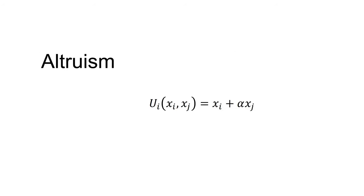Altruism is concern for the outcomes of others. To incorporate altruism, we simply need to provide a positive weight to the utility of others in the utility function. An example utility function might be the utility of agent I, which is a function of the outcome for agent I and the outcome for agent J, equals the outcome for agent I plus alpha times the outcome for agent J, where UI is the utility of agent I, XI the outcome for agent I, XJ the outcome for agent J, and alpha is some number greater than zero.